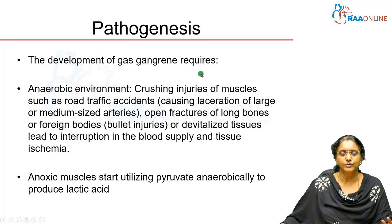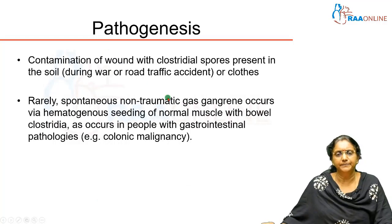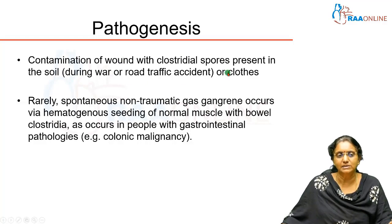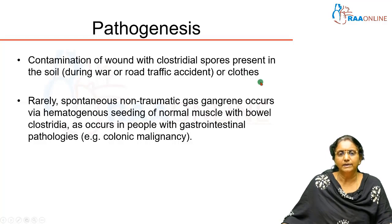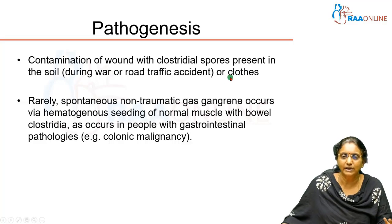For gas gangrene to develop, an anaerobic environment is essential. Crush injuries, road traffic accidents, large vessel cuts, open fractures, or dead tissue interrupt blood supply causing ischemia. Anoxic muscles utilize pyruvate and produce lactic acid. Simultaneously, the wound gets contaminated with clostridial spores from soil or clothing. The spores germinate in this anaerobic environment, multiply, invade, and produce toxin — this is how gas gangrene develops.